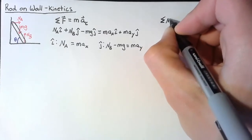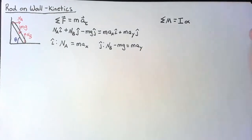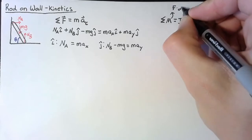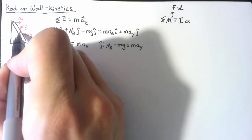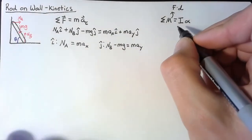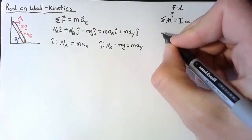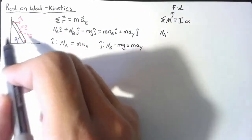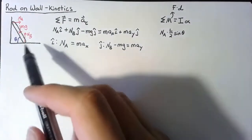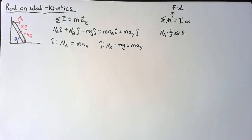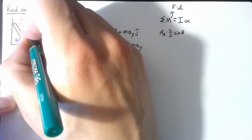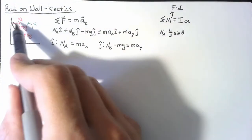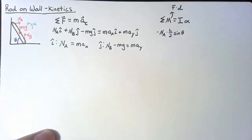The normal thing to do when that happens is to go to the sum of moments equation. To calculate moments I'm going to use the force multiplied by the perpendicular distance formula, with distances measured from the center of gravity. The first moment is caused by Na: the force is Na and the distance is L over 2 times sine theta. I'll define alpha as positive counterclockwise to match the previous video, so this force opposes alpha and gets a negative sign.